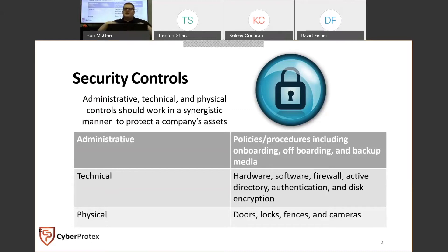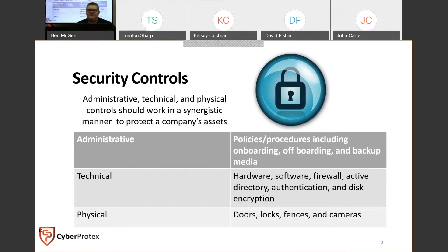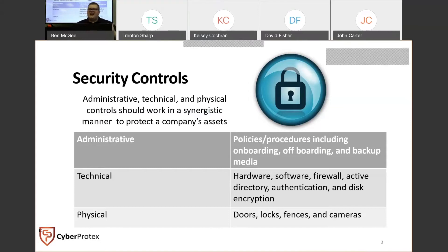For example, when I gave two weeks' notice at a previous job, immediately after my last shift I had to do an exit interview to ensure my access and discounts were cut off — that's an administrative offboarding control. Technical controls include implementing group policy, password expiration policies, firewalls, and using Active Directory to assign access. Physical controls include locking doors, fences, and cameras.